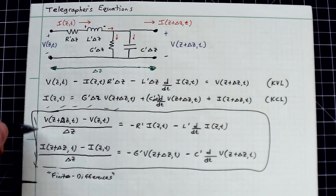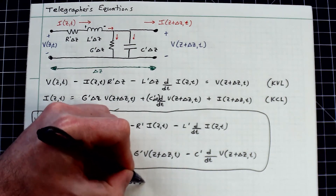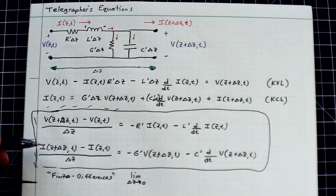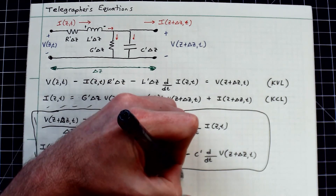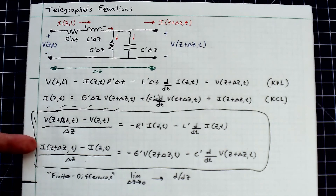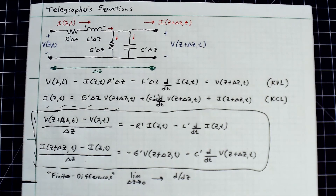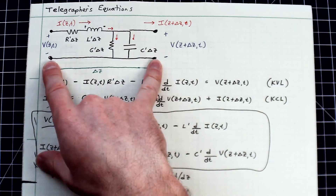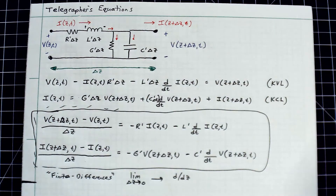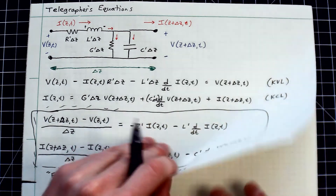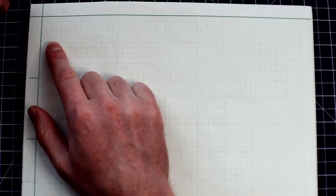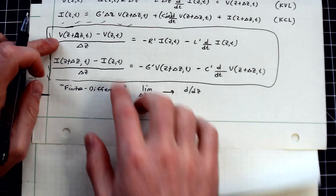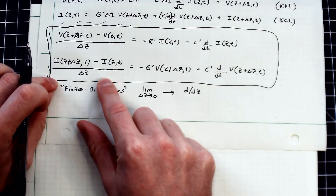Remember, if we take the limit as delta-z approaches zero, these finite differences turn into derivatives — specifically z-derivatives. So we're squishing what originally represented, say, one millimeter of a long transmission line down to a micron, a nanometer, a picometer, getting infinitesimally close to zero, and by definition those finite differences become partial derivatives.